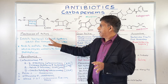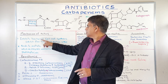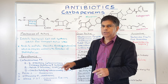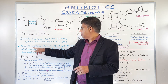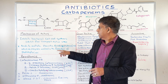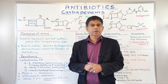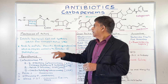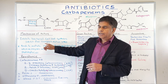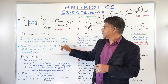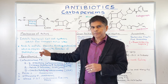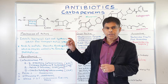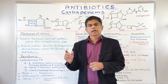Now let's look at the mechanism of action. Carbapenems inhibit bacterial cell wall synthesis by inhibiting the final transpeptidation step. They bind to multiple PBPs — penicillin-binding proteins — which are the enzymes involved in peptidoglycan formation, a critical component of the cell wall. This disrupts peptidoglycan formation, which is necessary for cell wall integrity and bacterial survival.